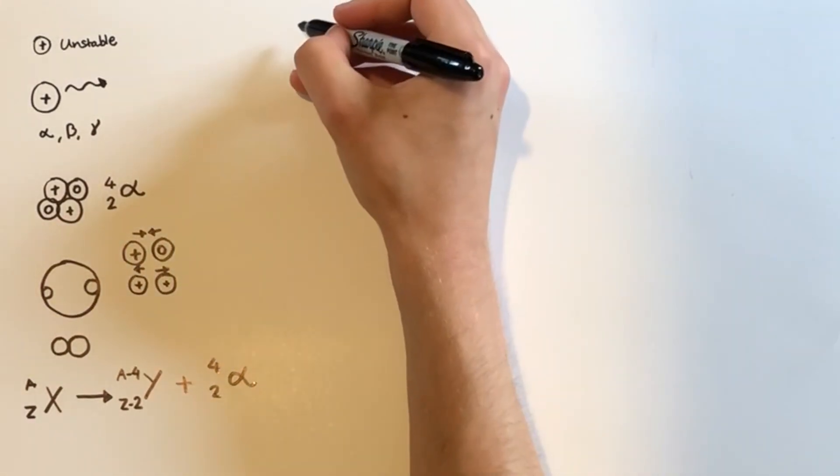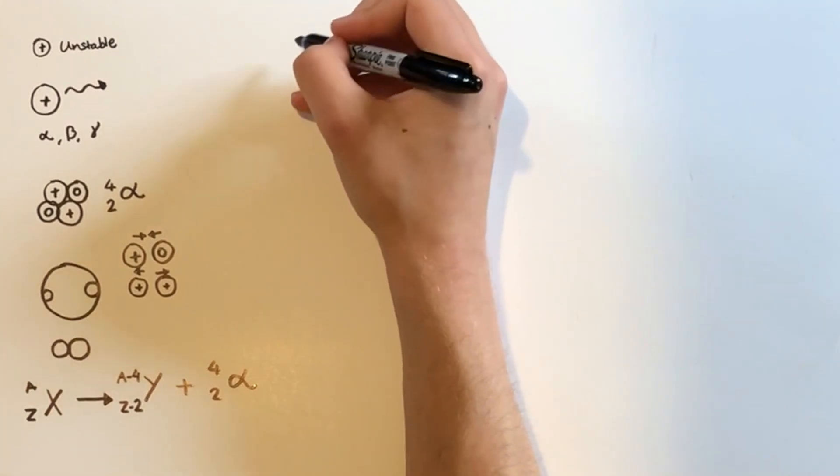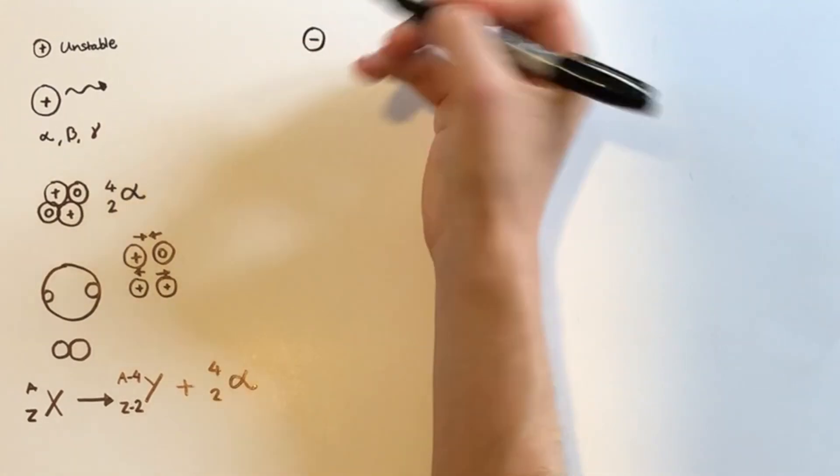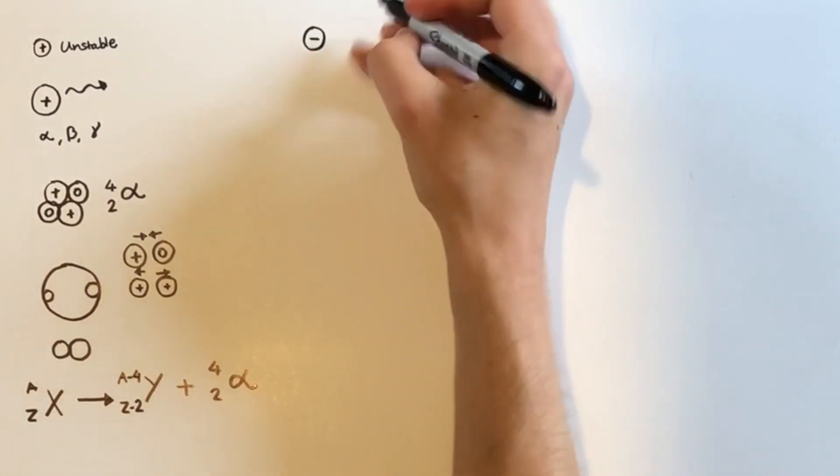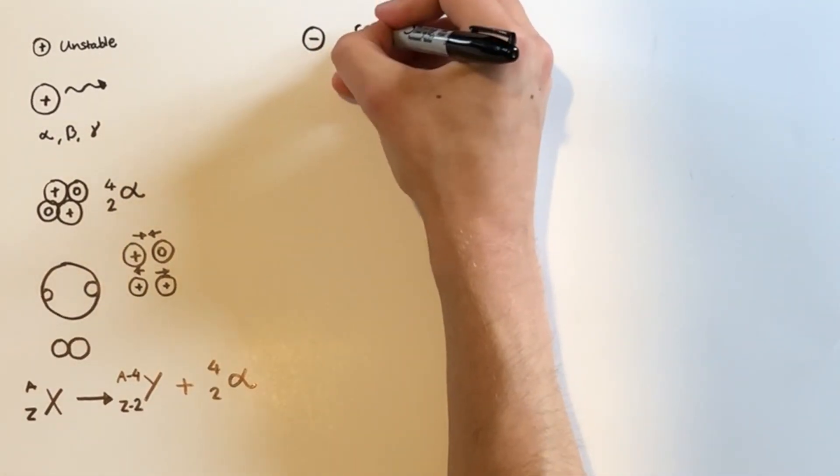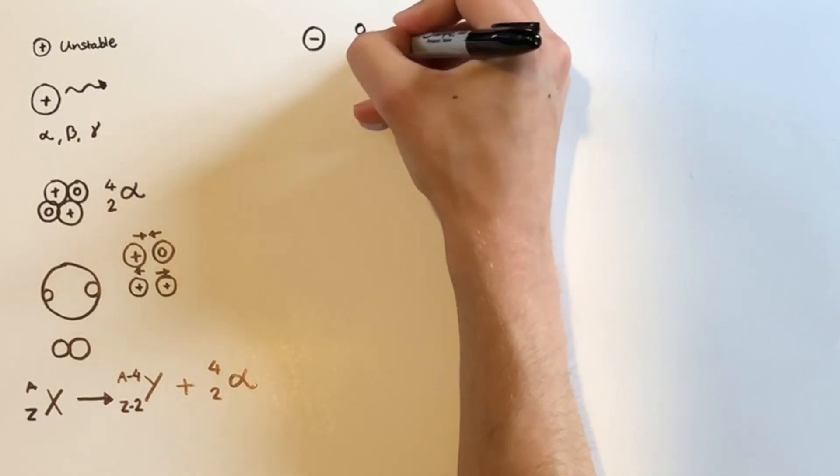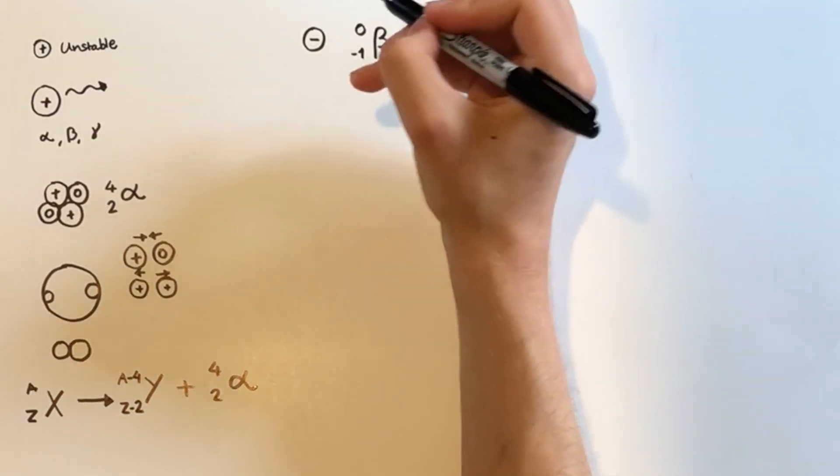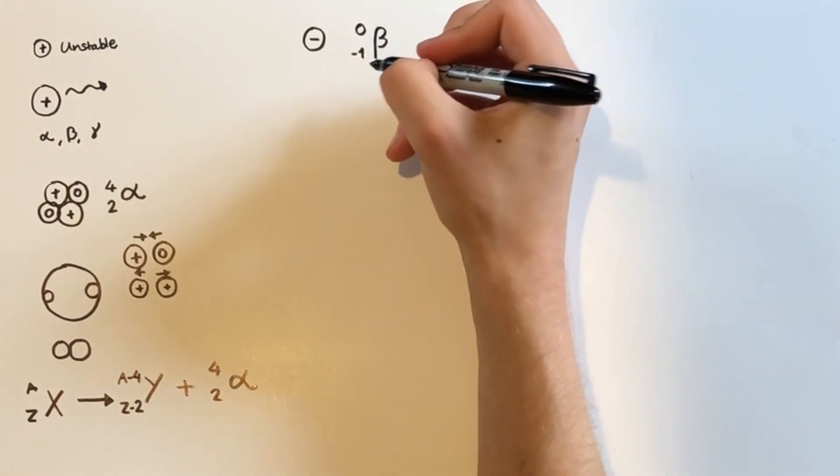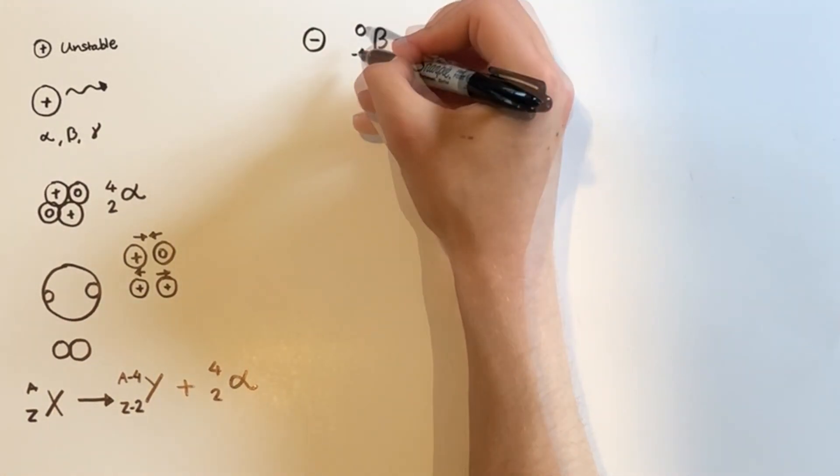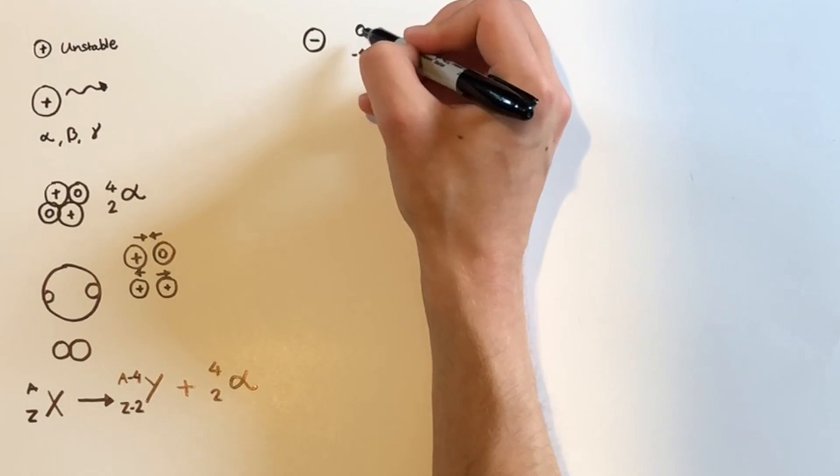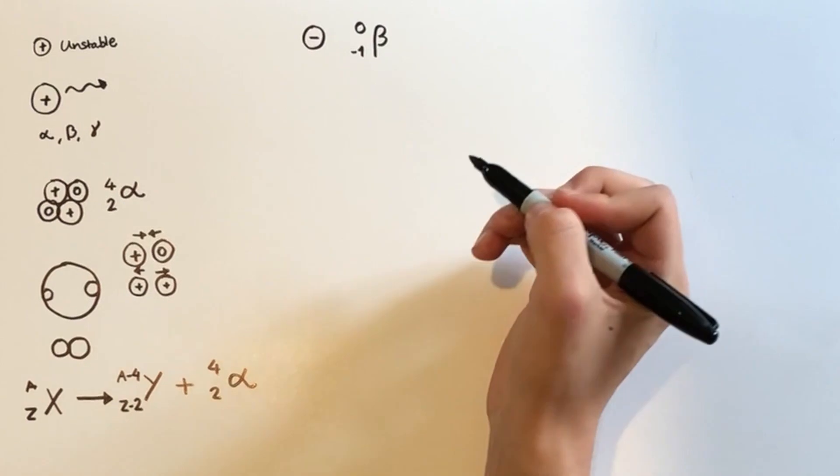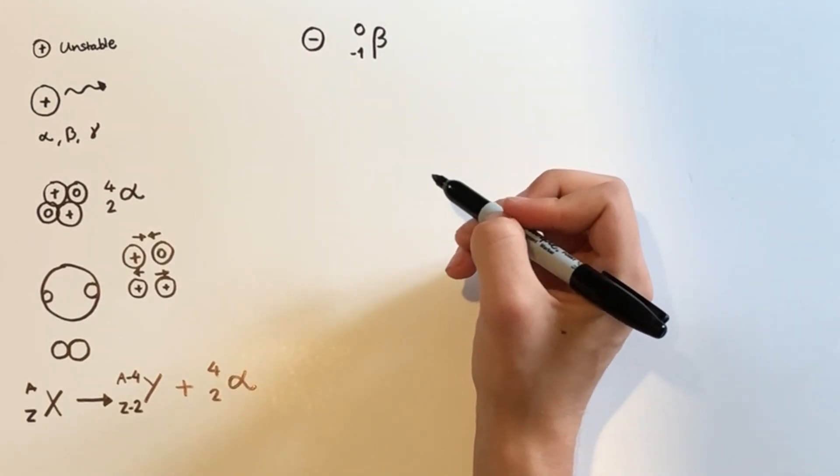Next, we're going to come and have a look at beta radiation. Now, a beta particle is simply an electron, and it's given the symbol 0, minus 1, beta, because it has a charge that is equal and opposite to that of a proton. So we simply write the nucleon number as zero.